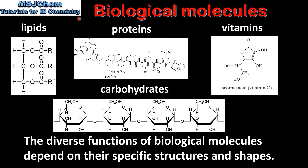Finally, we look at examples of biological molecules. The biological molecules that we look at are lipids, proteins, vitamins, and carbohydrates. The diverse functions of biological molecules depend on their specific structures and shapes.